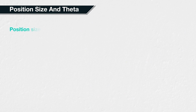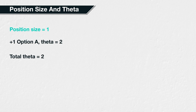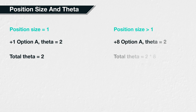To keep things simple, we have so far assumed a position size of one. This will rarely be the case in practice, so you will often need to know the theta for positions that vary in size. To calculate the theta of a position size that does not equal one, we simply multiply by the position size to give the total theta of the position.